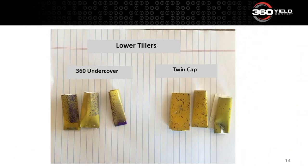Talking about septoria — we mentioned that tends to start down in the lower canopy. Thinking about some of these lower tillers, the 360 Undercover coverage in those lower tillers was much better than the twin cap system they used.